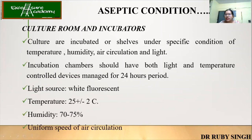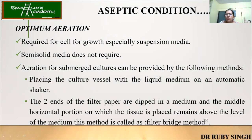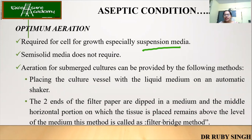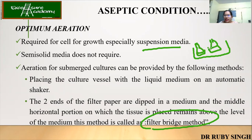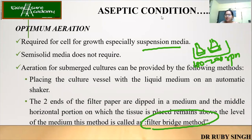You will have the culture room and incubators with proper temperature and humidity. The light source is going to be white fluorescent tube lights, with temperature, humidity, and air circulation provided. Optimum aeration is only required if you're using a suspension culture. If using semi-solid or solid media like agar or agarose, you don't need aeration. For suspension culture, you place the culture vessel with liquid media on an automatic shaker at around 150 to 200 RPM in circular motion, which provides the aeration.